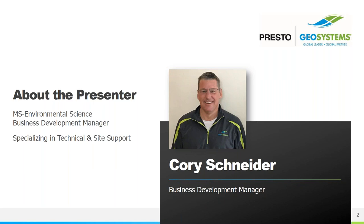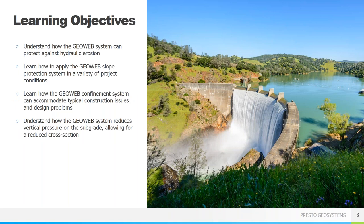We are located in Wisconsin and manufacture erosion control, stormwater management, and porous pavement products that are used all over the U.S. and the world. I have everyone muted for the presentation, so if you have questions, please type them into the question window and I will answer them at the conclusion. Today we'll learn how the GeoWeb system can protect against erosion from water flow, how GeoCells can accommodate typical construction issues and design challenges, and how GeoWeb can reduce vertical pressure on subgrades to allow for a reduced cross section in load support applications.